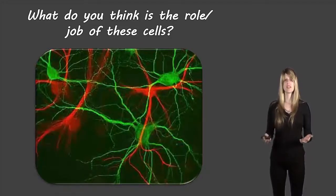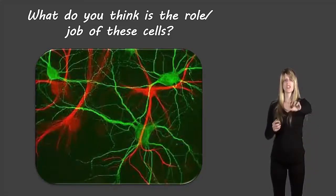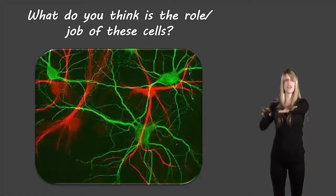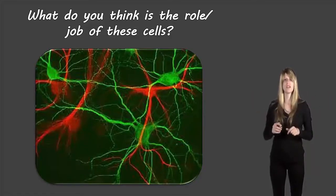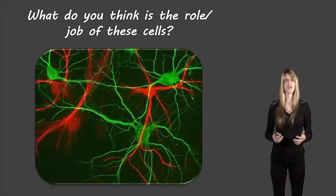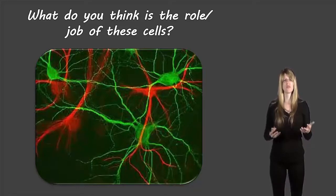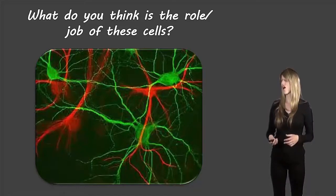These cells are neurons and they have projections that stick out from them, which allows them to connect to other cells and communicate with those other cells. This gives them a good shape for their job.